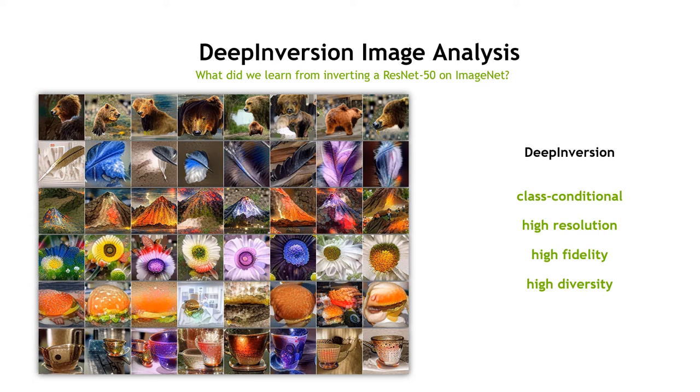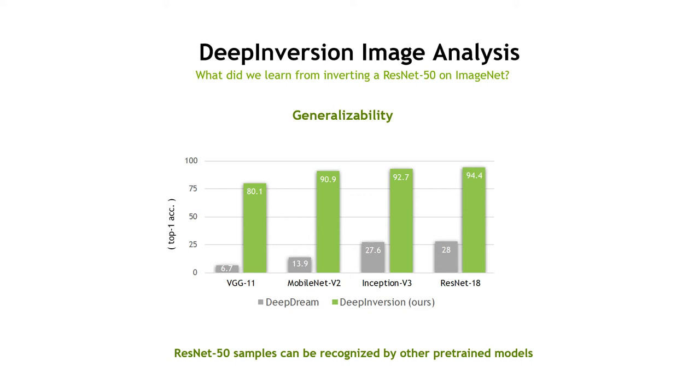We also show that images from ResNet-50 generalize very well to other models pre-trained on ImageNet. This demonstrates image generalizability and quality instead of overfitting to a single model.